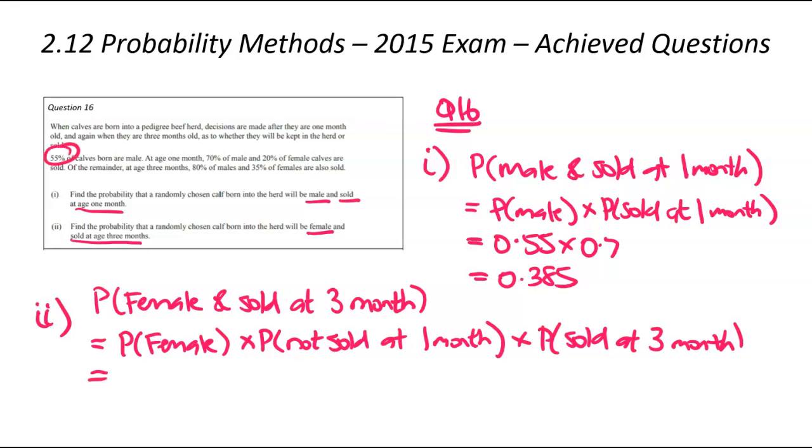The probability of a female, we know 55% male, which means the other 45% or 0.45 are female. We know that 20% of female calves are sold at the one month mark, which means the 80% or 0.8 are not sold. And finally, that three month one, we know that 35% of females are sold at the three month mark. That's going to be 0.35. We plug that into our calculator, we're going to get 0.126.